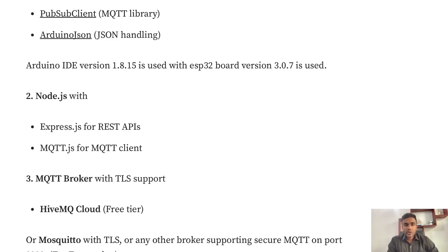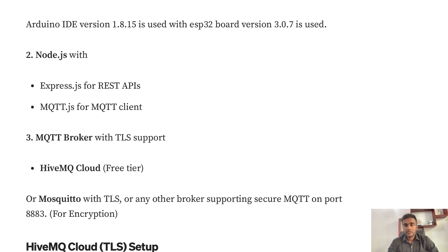As the MQTT broker with TLS support, we are using HiveMQ Cloud — it's a free tier you can use. You can also use Mosquitto if you like; it's up to you. Any MQTT broker with port 8883 can be used, since port 8883 is for encrypted communication.